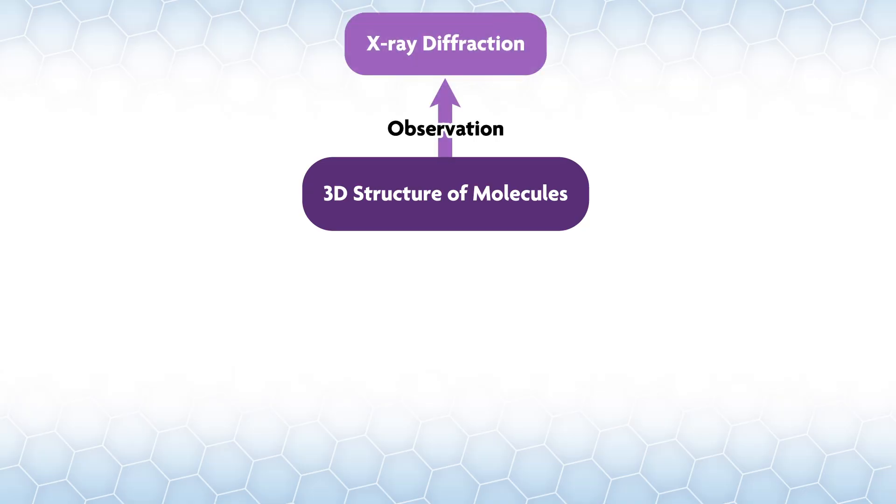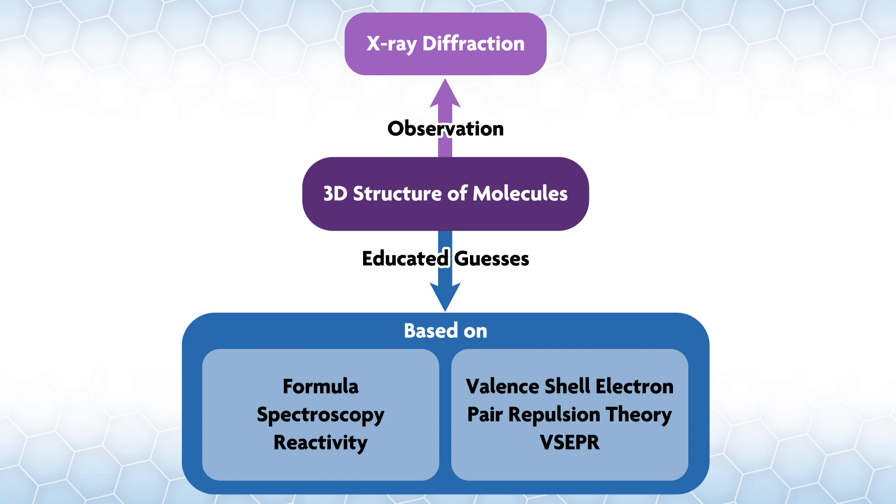While we have some methods for looking at the 3D structure of molecules like X-ray diffraction, for most of its existence chemistry progressed by making educated guesses as to what molecules must look like based on their formula, spectroscopy, and reactivity. If we can't get the 3D structure for a molecule for some reason, which happens more often than you may think, we need a guess as to what the molecule will look like.